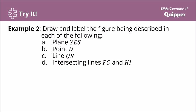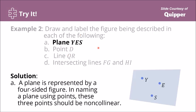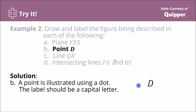Next exercise: draw and label the figure described in each of the following — Plane YES, Point D, Line QR, and intersecting lines FG and HI. For Plane YES: a plane is represented by a four-sided figure. Draw a four-sided figure and place Points Y, E, and S as non-collinear points — they should not all lie on the same line. We name this figure Plane YES. For Point D: a point is illustrated using a dot, so we draw a dot and label it with capital letter D.